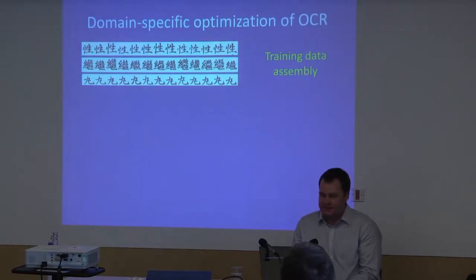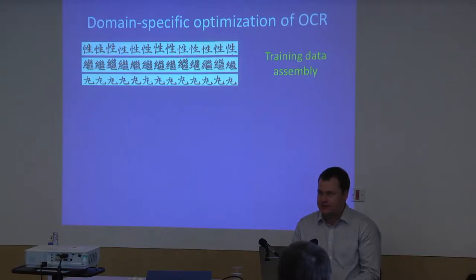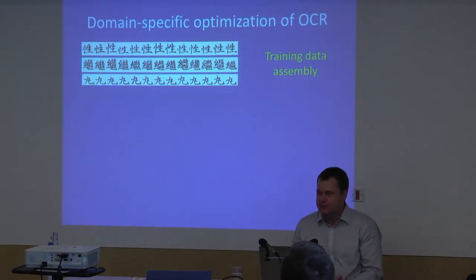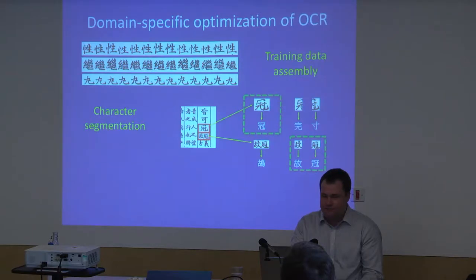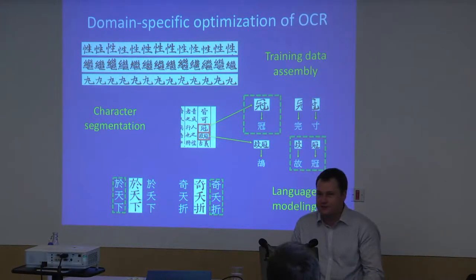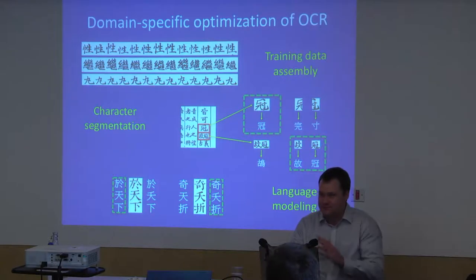I'm not going to say too much about OCR because the details are quite complex. Basically, the way we get adequate OCR for these historical materials is by adapting to the specific domain. One of the first things we do is training data assembly — we have automated methods of extracting labeled character images for all the characters we want to recognize. This is particularly tricky for Chinese because there are so many characters. We also work on character segmentation and language modeling, which takes advantage of contextual information as human readers would naturally do.